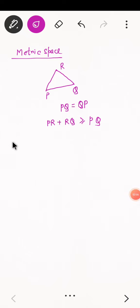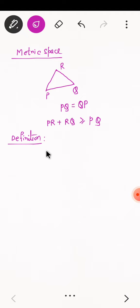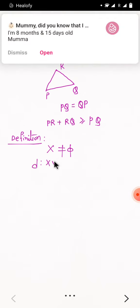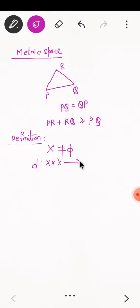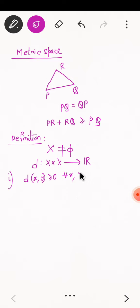Begin with the definition. Let X be any arbitrary non-empty set. Let D be a mapping from X cross X to R, the set of all real numbers. If D has the following properties: first property is D of X, Y greater than or equal to 0 for all X, Y belonging to X. This is the non-negative property.